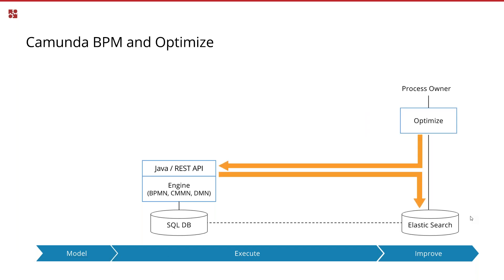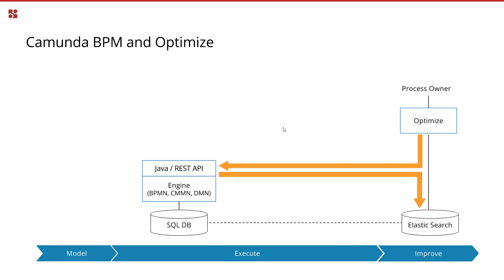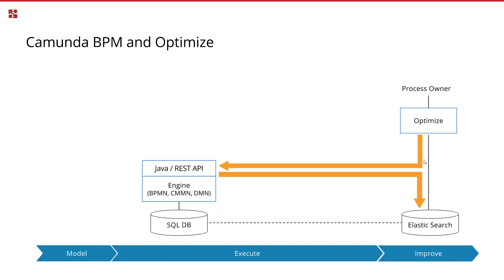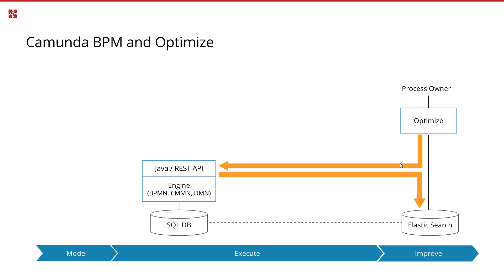Optimize pulls in process instances from the Camunda history database via the Camunda BPM REST API — asking for the process instances that have been executed including variables, then staging those instances into Elasticsearch. When you do it for the first time, it might take minutes or even hours depending on the amount of data in your history. But that's just the initial setup. Once done, Optimize will incrementally pull in data via the REST API at increasing intervals, always looking for new process instances.